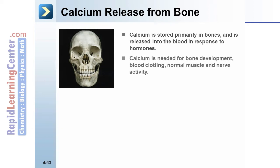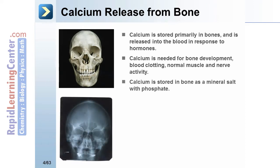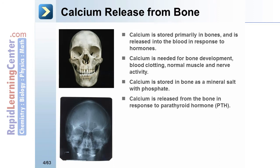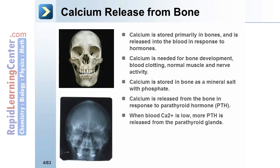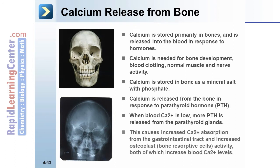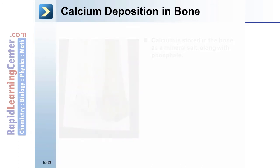Calcium is needed for bone development, blood clotting, and normal muscle and nerve activity. Calcium is stored in bone as a mineral salt with phosphate. Calcium is released from bone in response to parathyroid hormone (PTH). When blood calcium is low, more PTH is released from the parathyroid glands, causing increased calcium absorption from the gastrointestinal tract and increased osteoclast (bone resorptive cell) activity, both of which increase blood calcium levels.